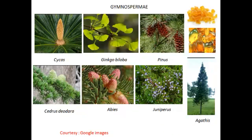Gymnosperms are considered a higher form when compared to bryophyta and pteridophyta. The term gymnosperm was initially introduced by Theophrastus in 300 BCE. These plants represent the most ancient group of seed plants. The pteridosperms or seed ferns were fern-like seed-bearing plants. The members of Cordaitales dominated the earth in Carboniferous and Permian periods, and it is perhaps due to this fact that the Carboniferous period is sometimes referred to as the age of ferns. The Jurassic was perhaps the best time for gymnosperms.